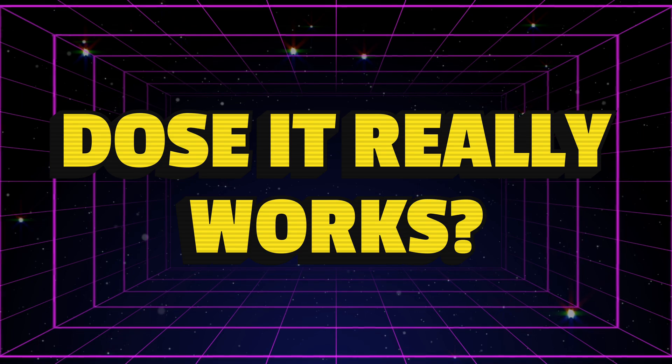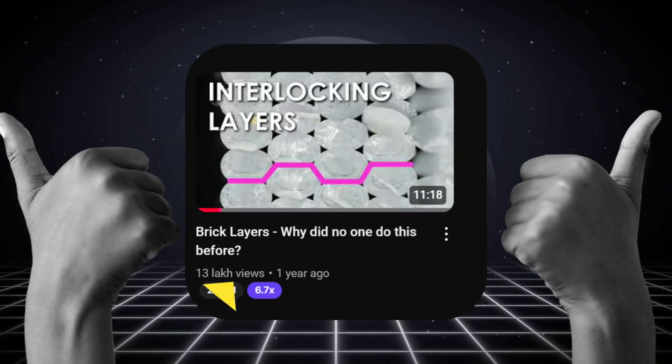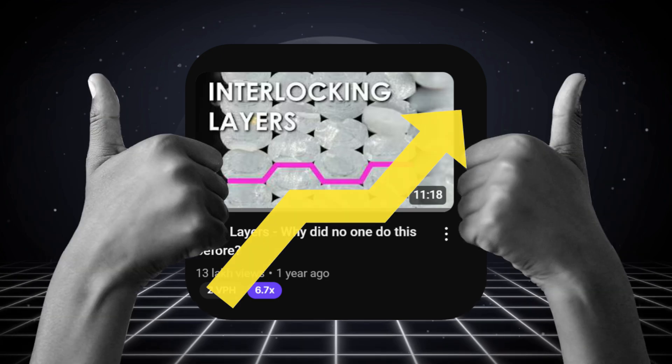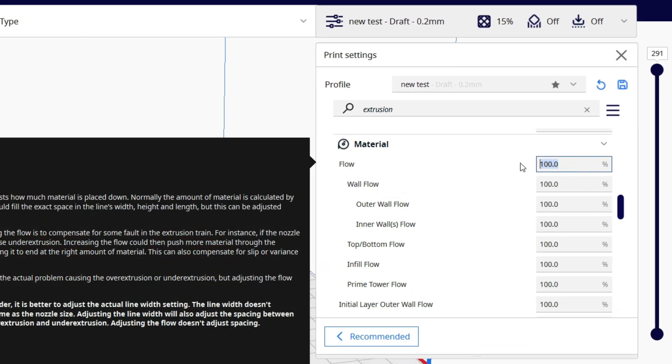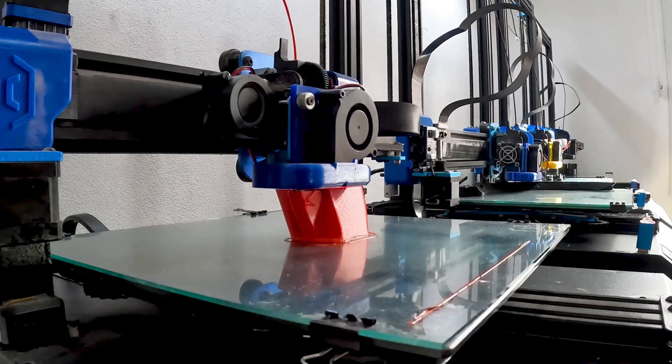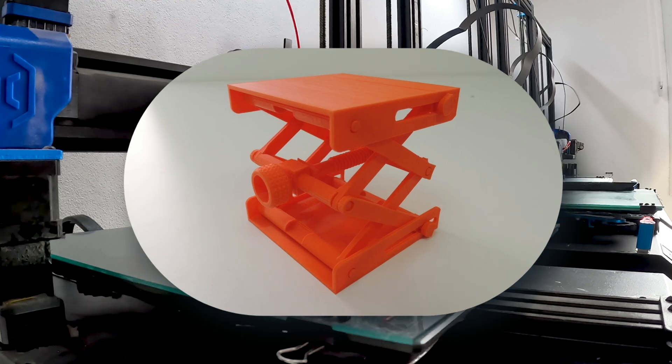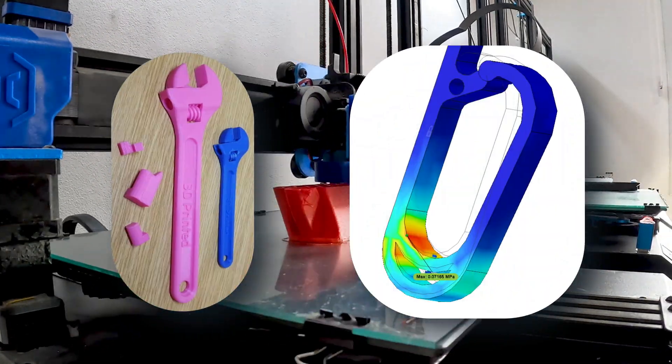Does it really work? Absolutely. Tests by CNC Kitchen showed real strength improvements, especially when combined with a small flow increase. About 110% extrusion flow. Without tuning the flow, results vary. But when dialed in, stronger parts, especially for functional or load-bearing prints.